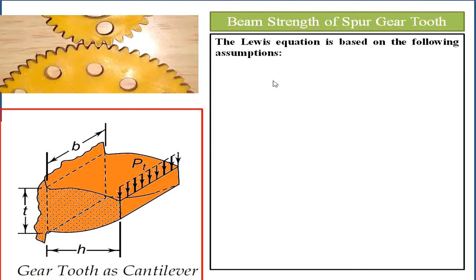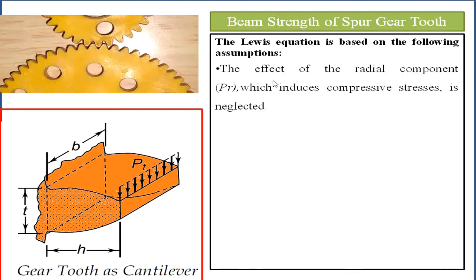The assumptions for deriving the Lewis equations include: the effect of the radial component Pr is neglected. Pr is also called the separating force because, for the pinion it acts upward and for the gear it acts downward. This force induces compressive stresses towards the axis of the gear, and this radial component Pr is neglected in the equations.